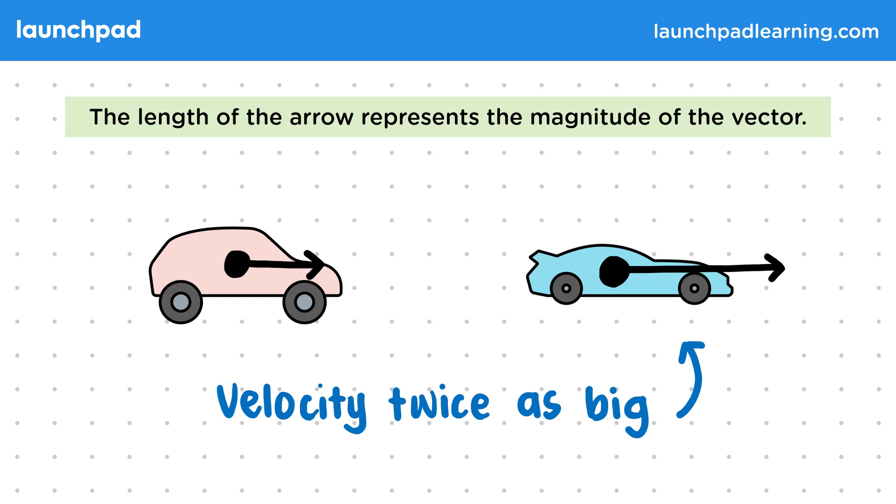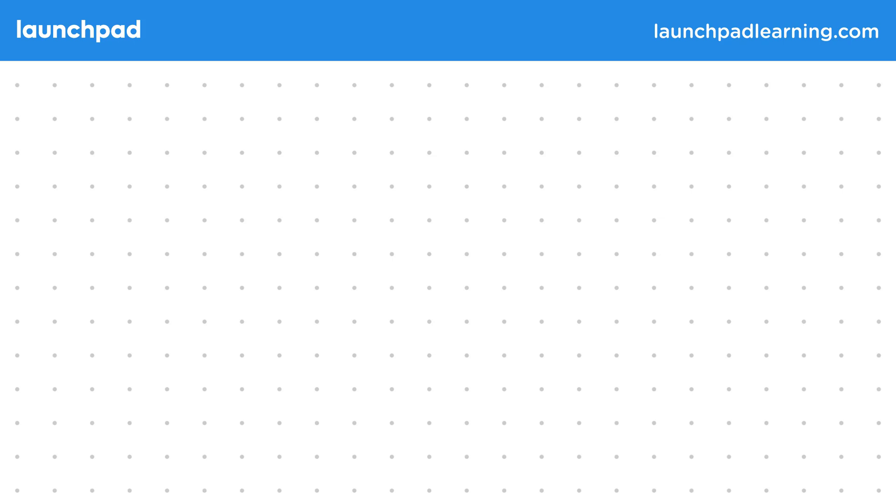So what does the direction of the arrow tell us? The direction of the arrow represents the direction of the vector.